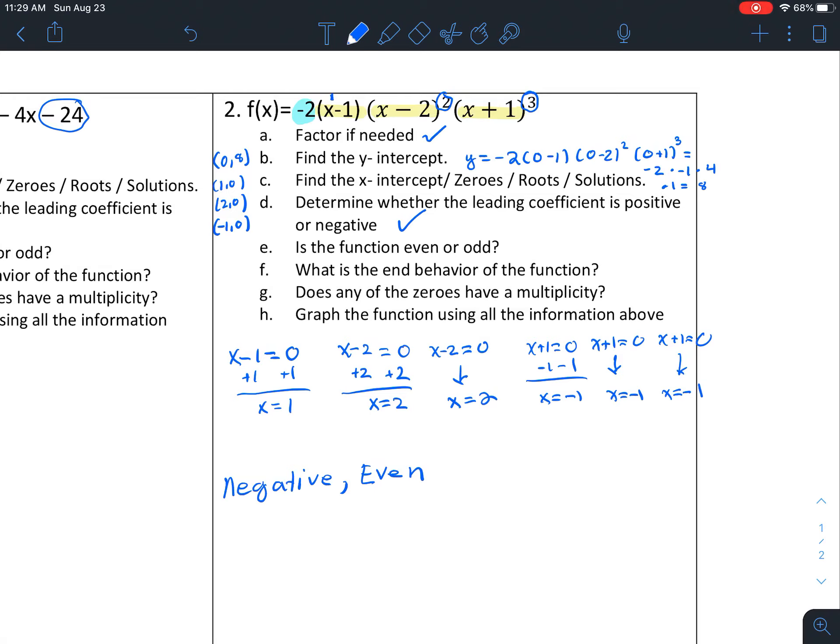So it's negative because the 2 is negative in the front. And if we multiply this whole thing out, our biggest degree that we would get is a 6. And if you don't believe me, you could actually distribute everything and see that. So I challenge you to do that if you're not convinced that it's 6.